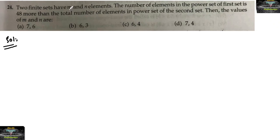Two finite sets have m and n elements. The number of elements in the power set of the first set is 48 more than the total number of elements in the power set of the second set. Find the values of m and n.